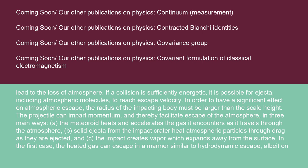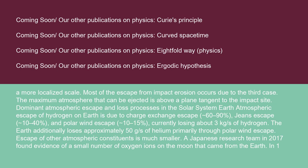Solid ejecta from the impact crater heat atmospheric particles through drag as they are ejected. The impact creates vapor, which expands away from the surface. In the first case, the heated gas can escape in a manner similar to hydrodynamic escape, albeit on a more localized scale. Most of the escape from impact erosion occurs due to the third case.